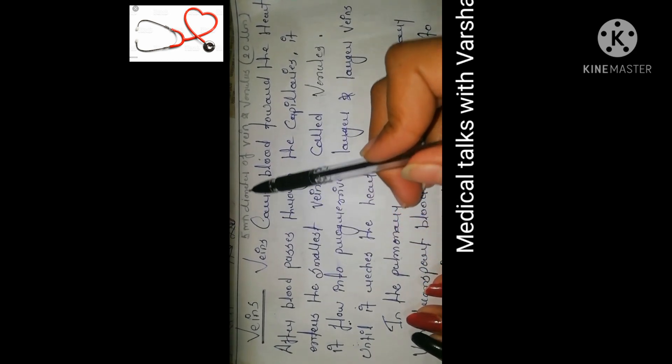Last topic: veins. The diameter of venules is 5 micrometers and veins are about 20 micrometers. This is also called the venous system. Veins carry blood at low pressure, unlike arteries which carry blood at high pressure. Therefore, the walls of veins are thinner compared to the walls of arteries.